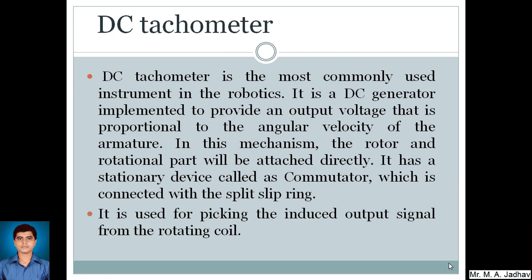Next, that is DC tachometer. DC tachometer is the most commonly used instrument in robotics. It is a DC generator implemented to provide an output voltage that is proportional to the angular velocity of the armature. In this mechanism, the rotor and rotational part will be attached directly. It has a stationary device called as commutator which is connected with the split slip ring. It is used for picking the induced output signal from the rotating coil.